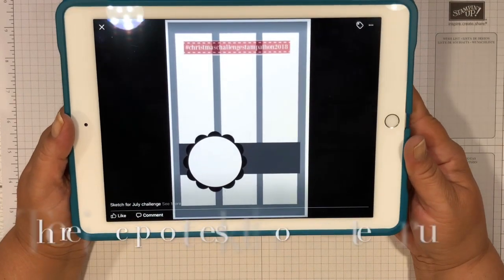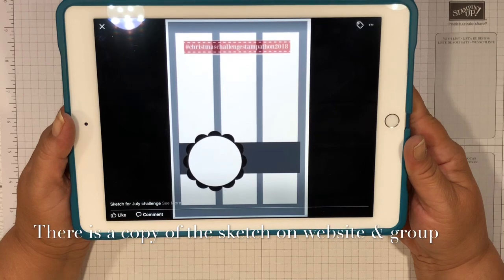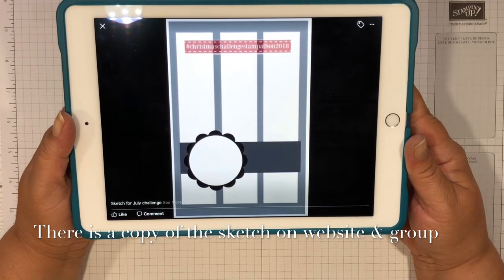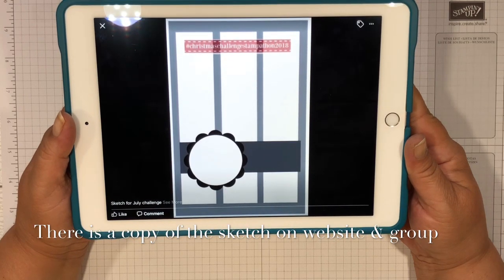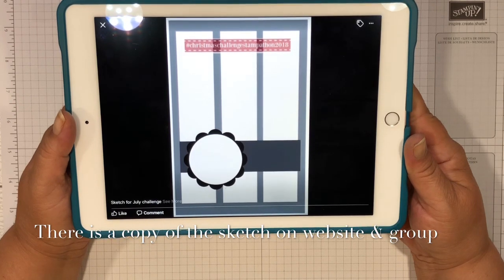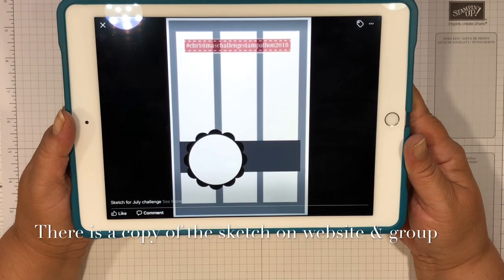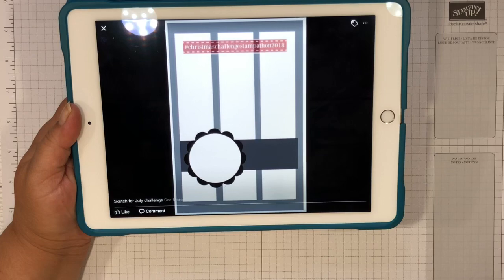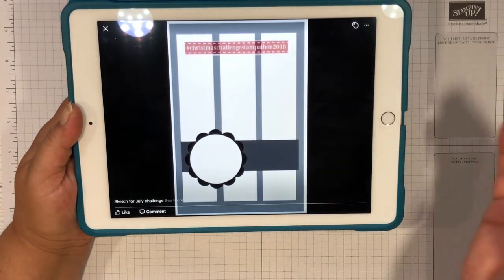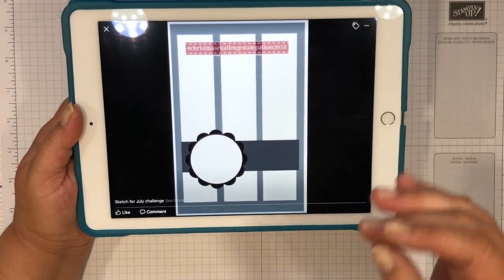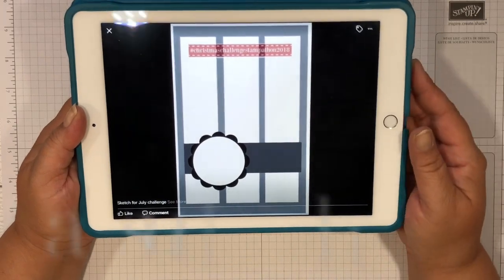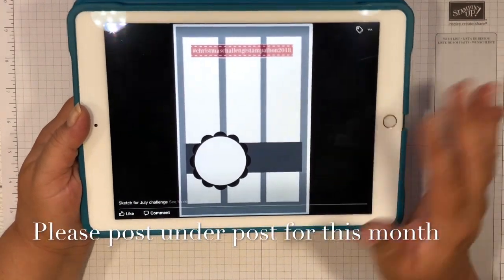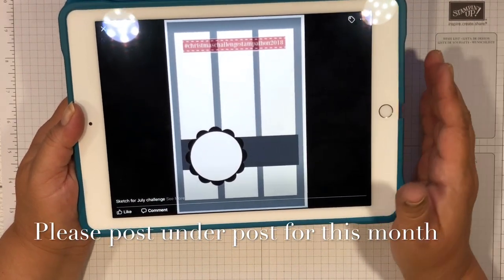We can't wait to see what you guys come up with. Don't forget to click on the link below to the Facebook group for the Christmas Challenge Stampathon and to post the photo of your project underneath the post that is marked for July 25th. Make sure not to do it as a separate post, but post it as a comment to that post for July.